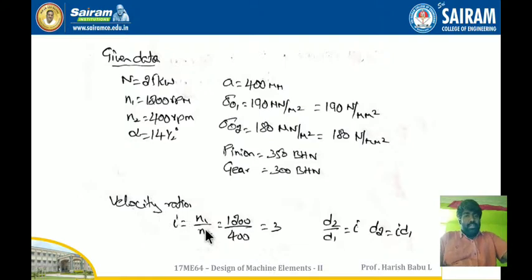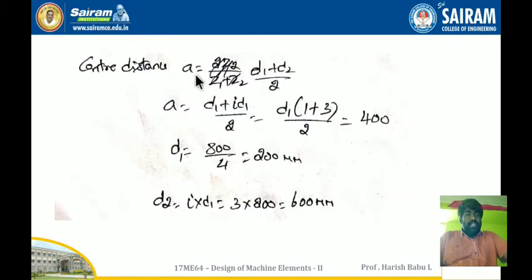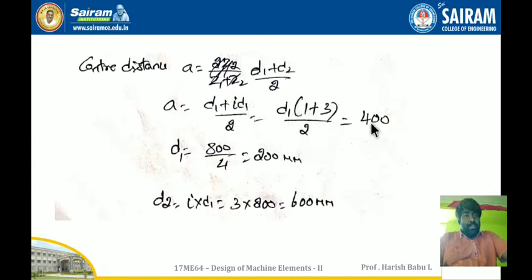The velocity ratio I equals N1/N2. Both values are given, so I get velocity ratio as 3. Since D2/D1 = I, D2 = I × D1. The center distance A = (D1 + D2)/2 = 400 mm. Substituting D2 = I × D1, we get D1(1 + 3)/2 = 400, giving D1 = 200 mm. Therefore D2 = 3 × 200 = 600 mm.